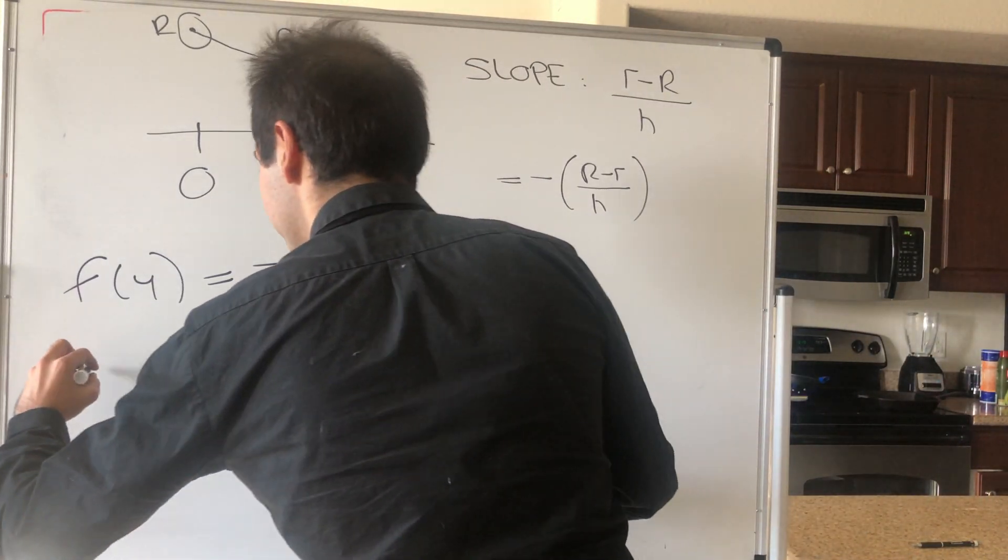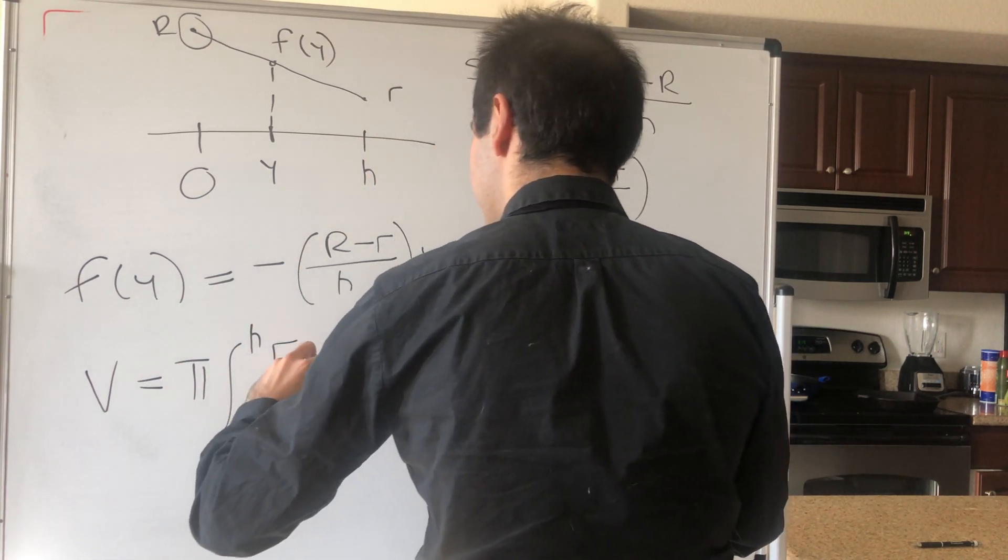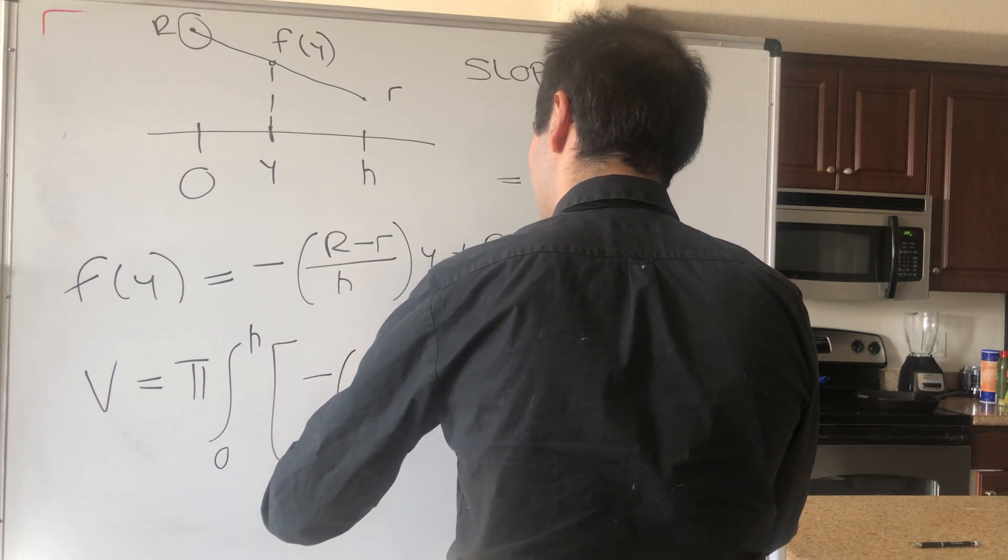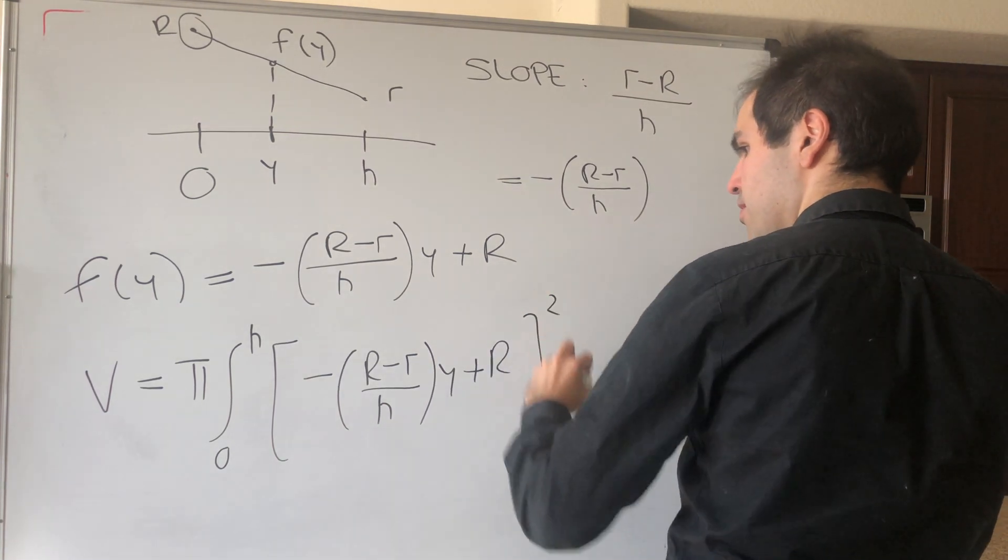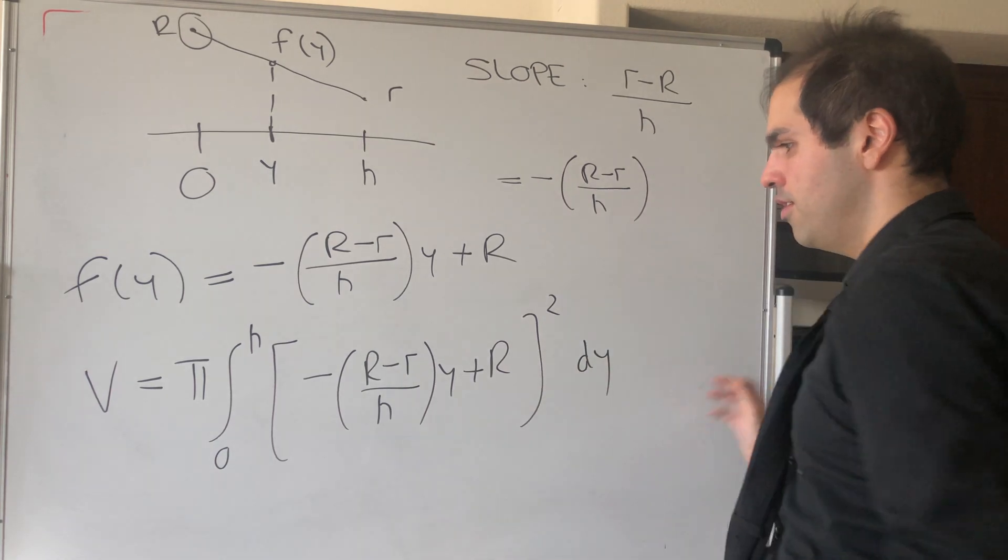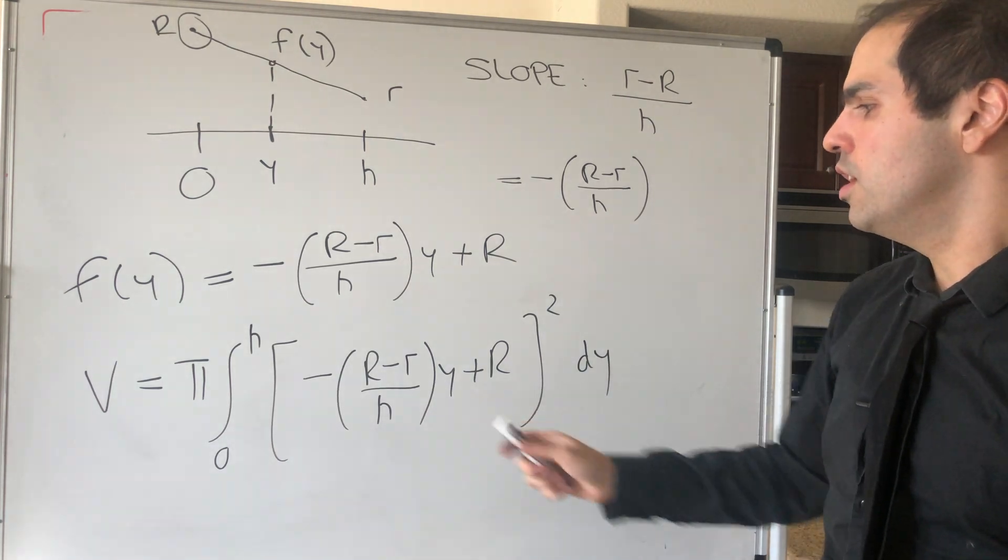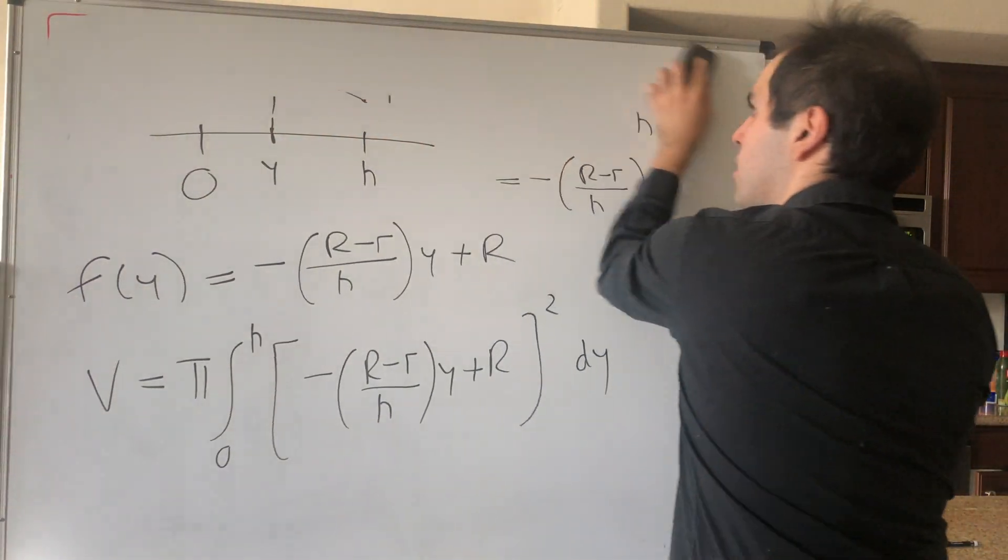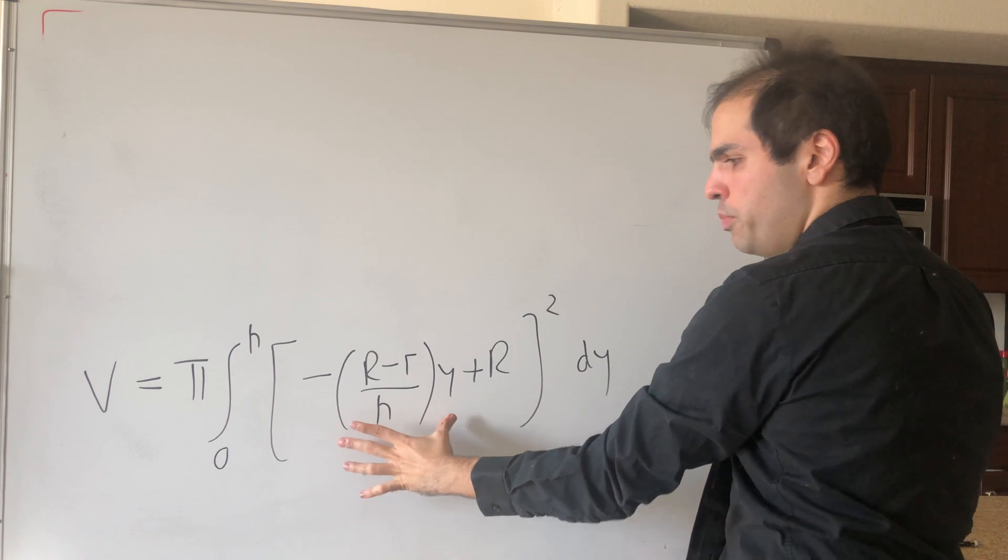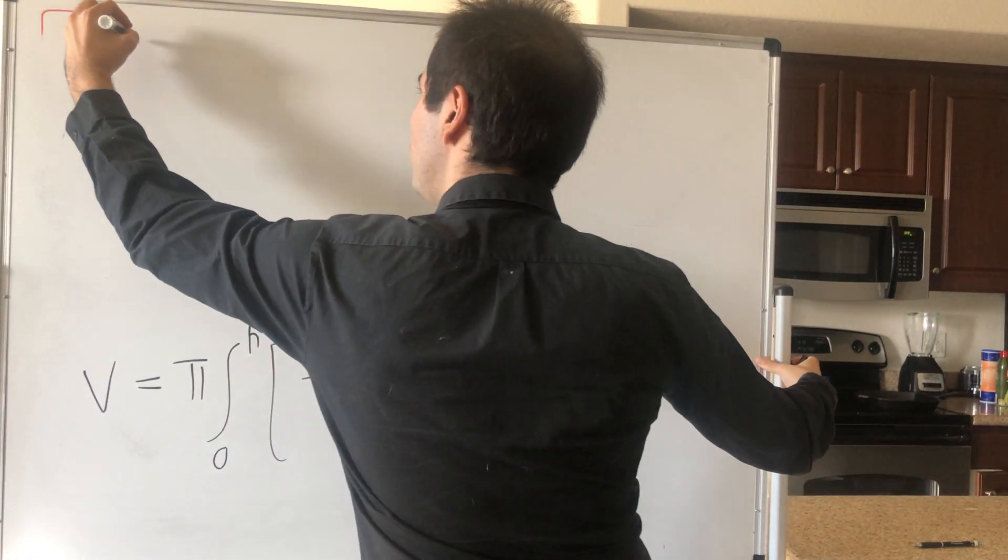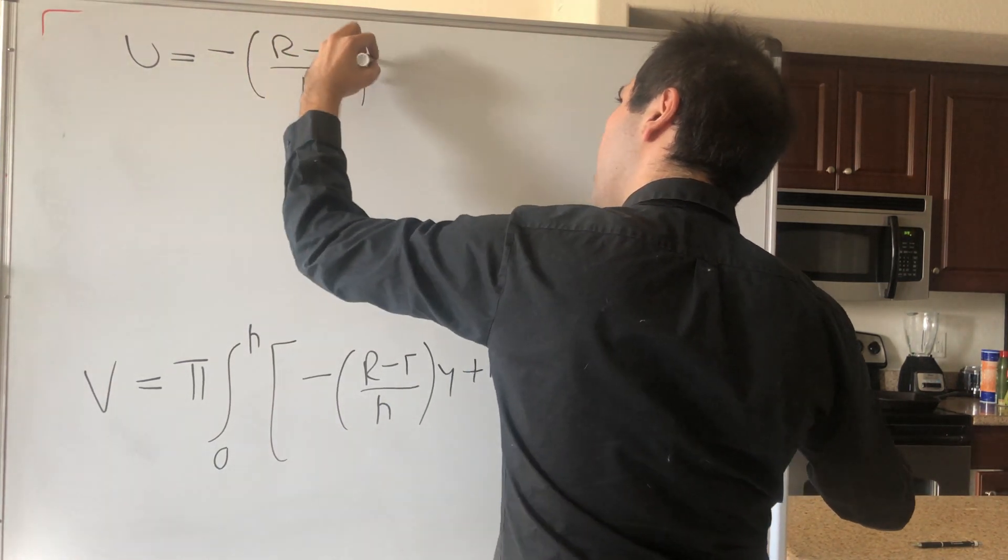So the volume is just pi integral from 0 to h of this thing: minus (R minus r) over h, y plus capital R squared, and that's dy. Now this is very ugly, but just a square, so let's just use a u-substitution to calculate this. So in fact, let's be super lazy and just let u be the whole thing here. So u is minus (R minus r) over h, y plus R.